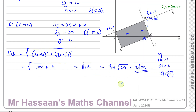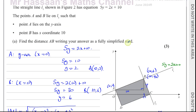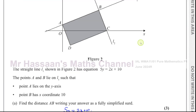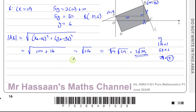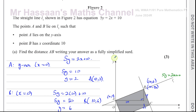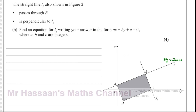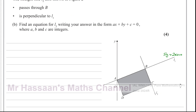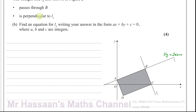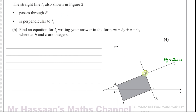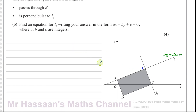So the answer for part A is 2 root 29. Now for part B: the straight line L2 is also shown in figure 2. L2 passes through point B and is perpendicular to line 1 — there's a right angle between them. We need to find the equation of L2 in the form Ax plus By plus C equals 0, where A, B, and C are integers.